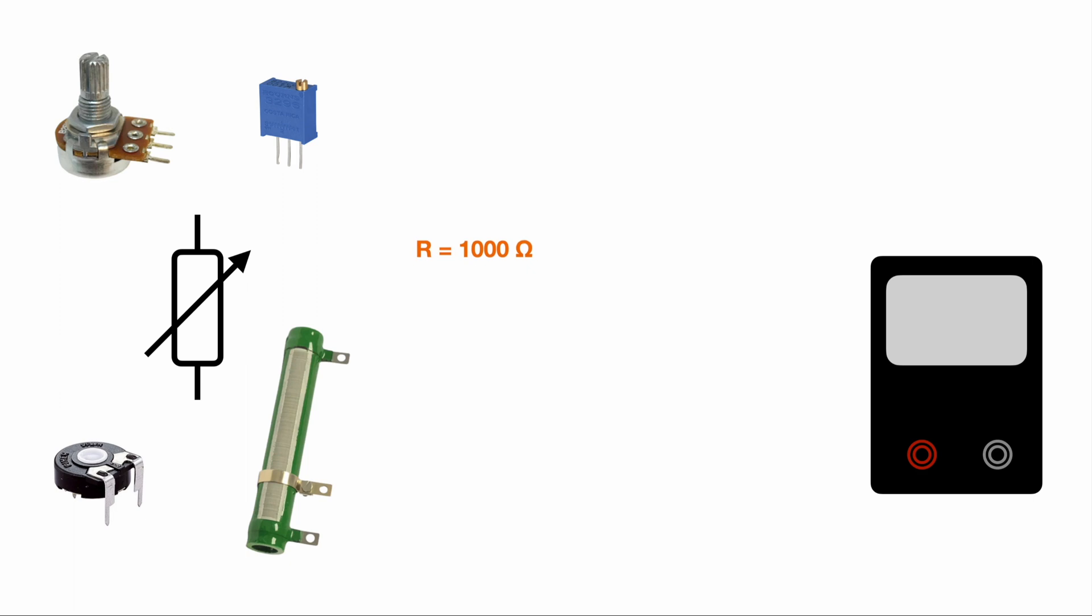But of course, not every potentiometer looks like the green one. We also have other types like this one up here in the corner or this one down here. Those round shapes are more common than the linear ones. So we want to take a look on those ones as well.